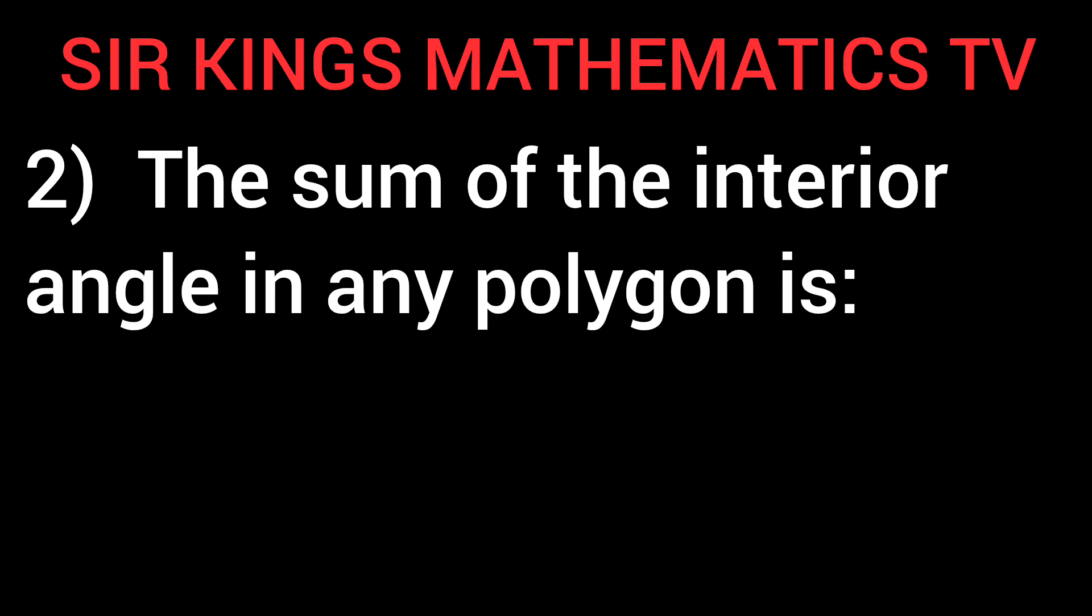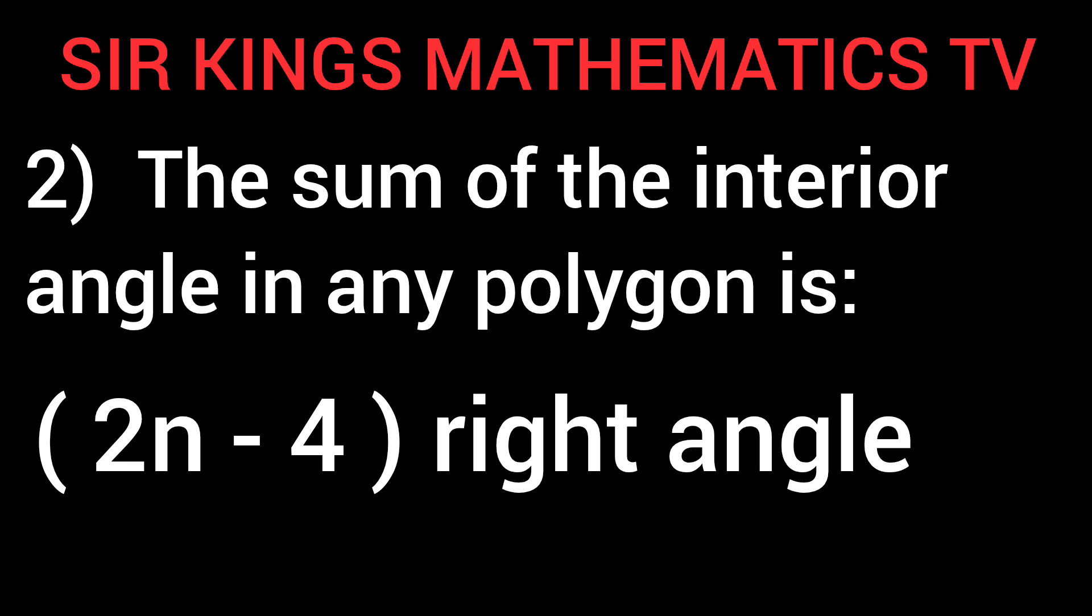Note 2: The sum of the interior angles in any polygon is (2n - 4) right angles.